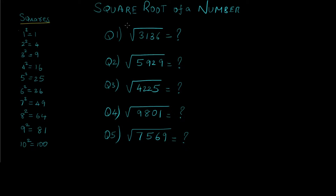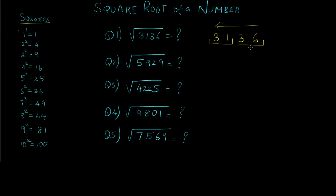Let's see the first question wherein we have to find out the square root of 3136. We write down this number 3136. Now what we need to do is make pairs of two starting from right to left. So this is the first pair and this is the second one.